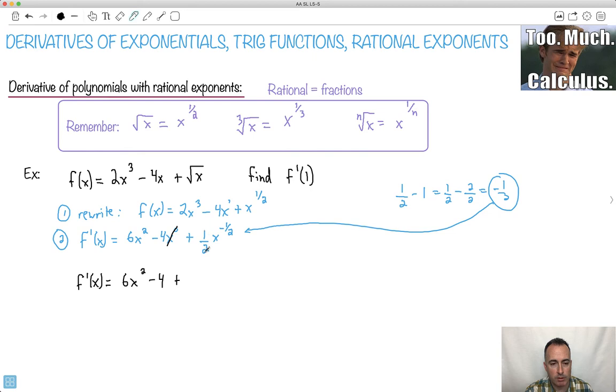Let's see, plus. Now there's a 1 over 2, those are still there. This x to the minus 1 half, remember what a negative exponent means? It means it's on the bottom. So it turns out it's 1 over 2 times x to the 1 half.